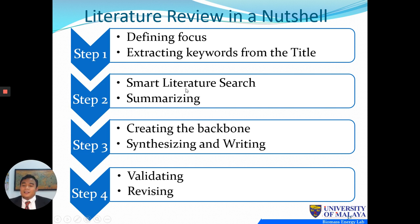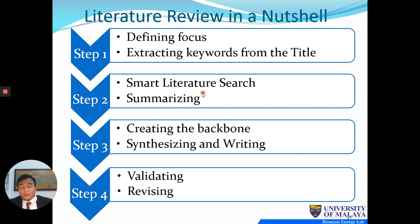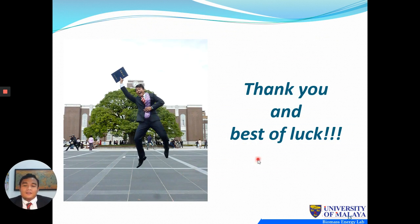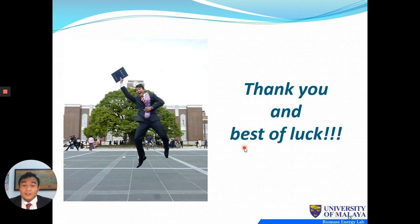In a nutshell, writing a literature review requires four steps: define your focus by extracting keywords from the title; do a literature search using the tips shown; summarize by creating the backbone, synthesizing, and writing; then validate and revise your article. Thank you and best of luck. The best way to do a literature review is to just start writing — you won't know what goes wrong until you do. Start writing, follow the steps, review it, and keep improving.